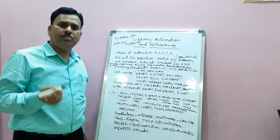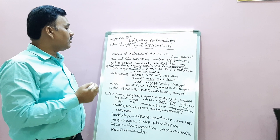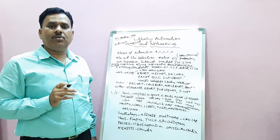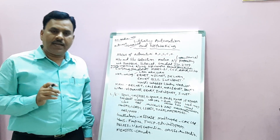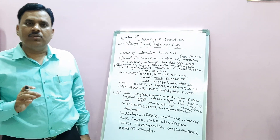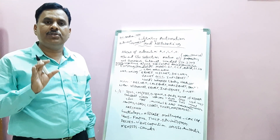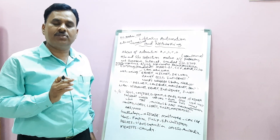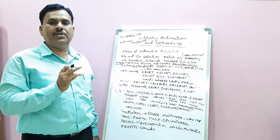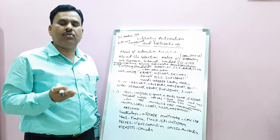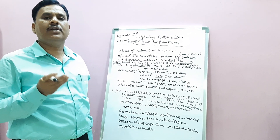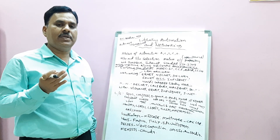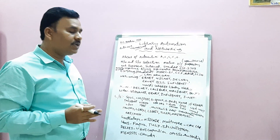There are various automation modules: acquisition, circulation, serial control, and OPAC — Online Public Access Cataloging. These are the different types of library automation modules we have discussed. Acquisition is nothing but acquiring the document; circulation is issuing and charging of books; serial control is used for journals; and OPAC is the Online Public Access Catalog.